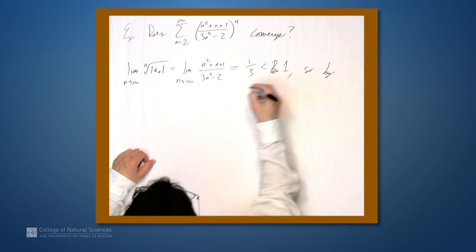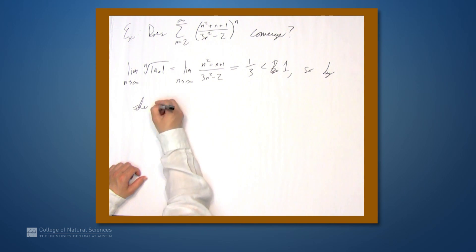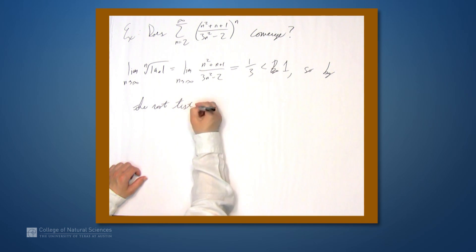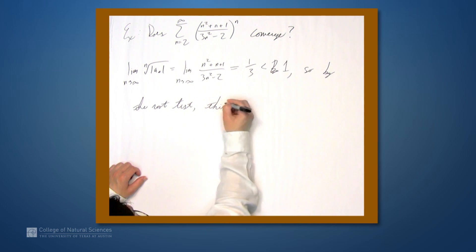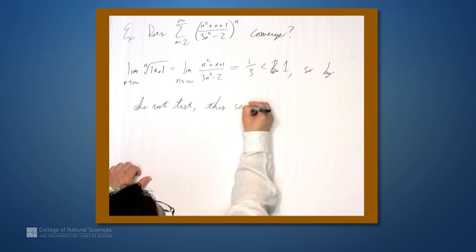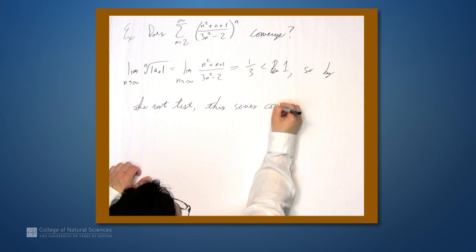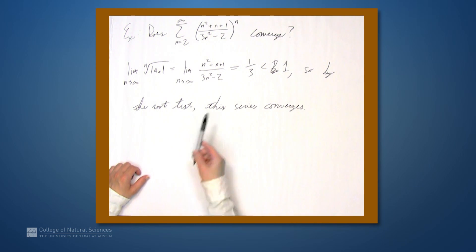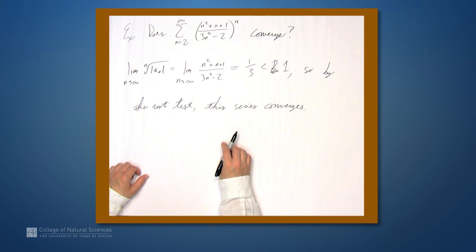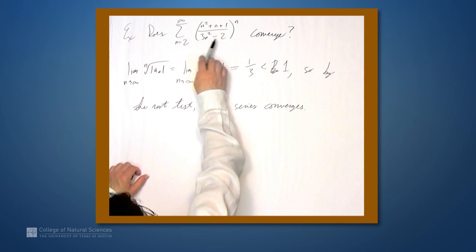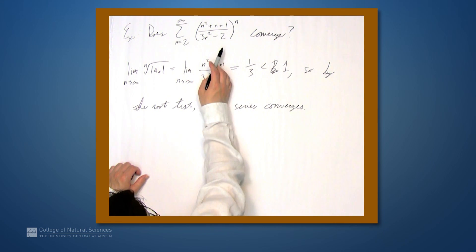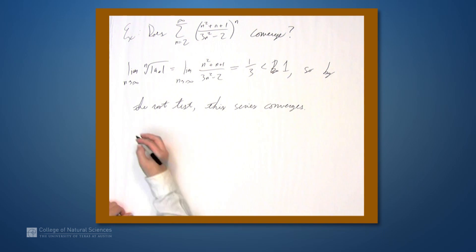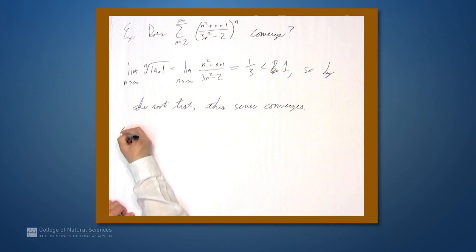This is a ratio of polynomials with the same degree in the leading terms, so we take the limit by taking the ratio of the leading coefficients. This gives us 1/3, which is less than 1. So by the root test, this series converges. Since all the terms are positive, it also converges absolutely.